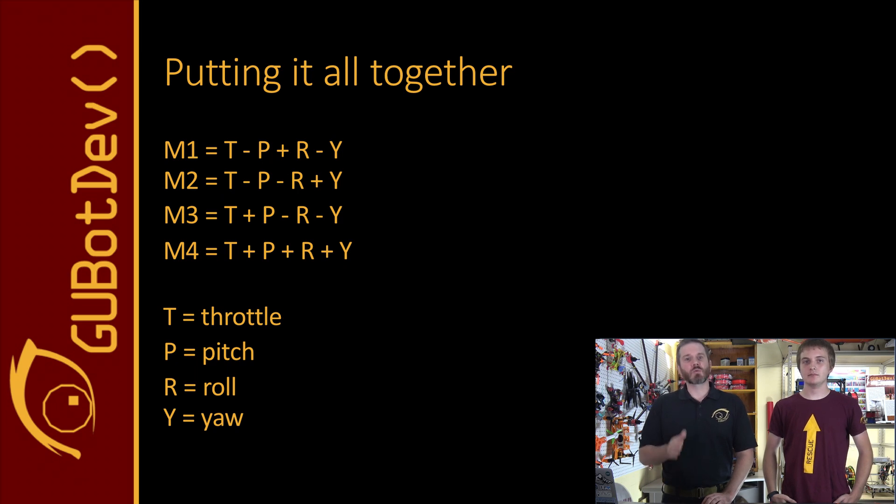In order to calculate the thrust and or torque that must be produced by each motor in order to make the drone fly in a particular direction or maneuver, you must take into consideration the amount of pitch, roll and yaw the maneuver requires. Let's say rolling right is a positive value and rolling left is a negative value. Pitching forward is a positive value and pitching backward is a negative value. And finally, yawing right is a positive value and yawing left is a negative value. Then the equations above would determine the amount of thrust or torque each motor should produce.